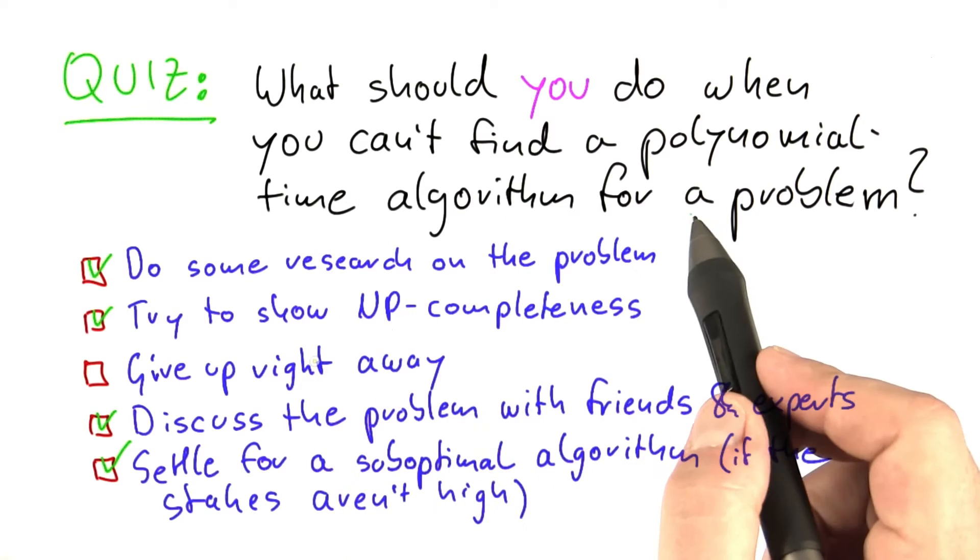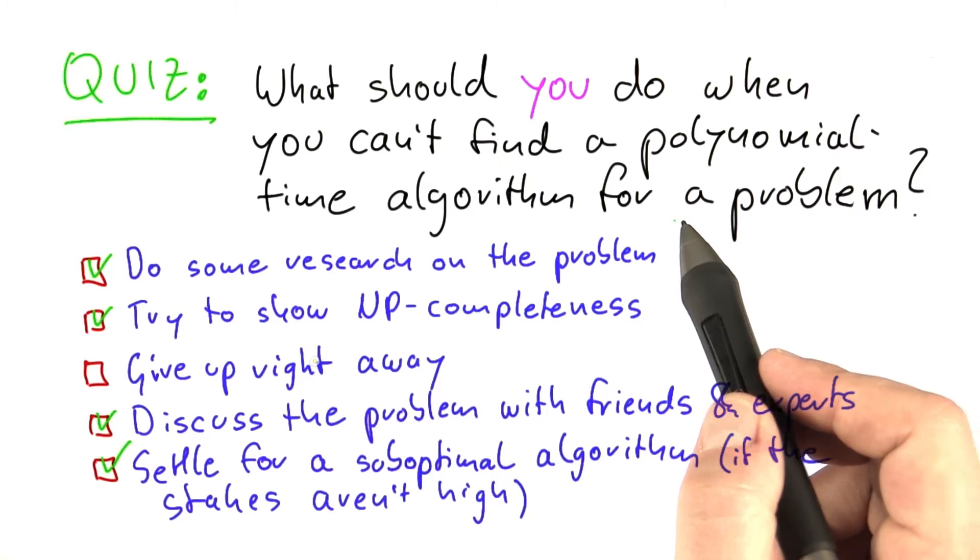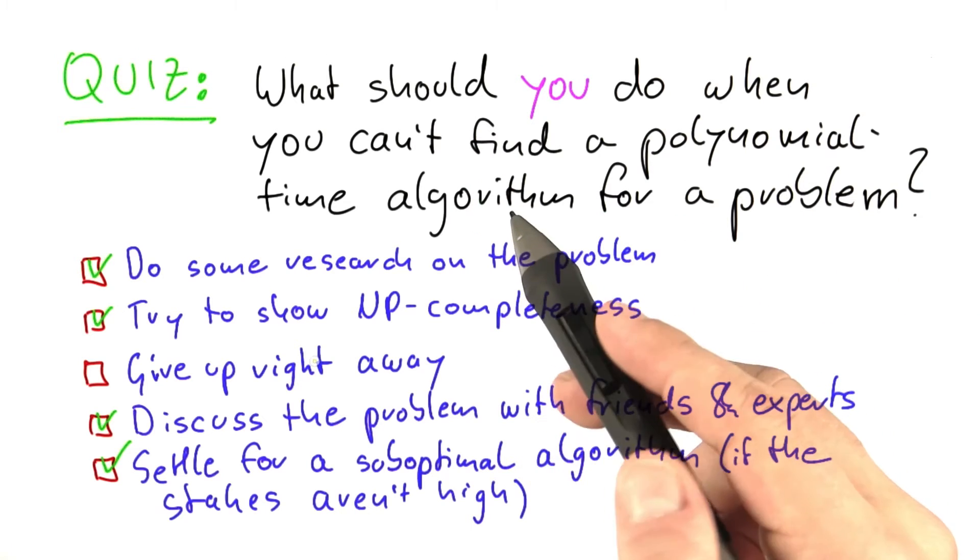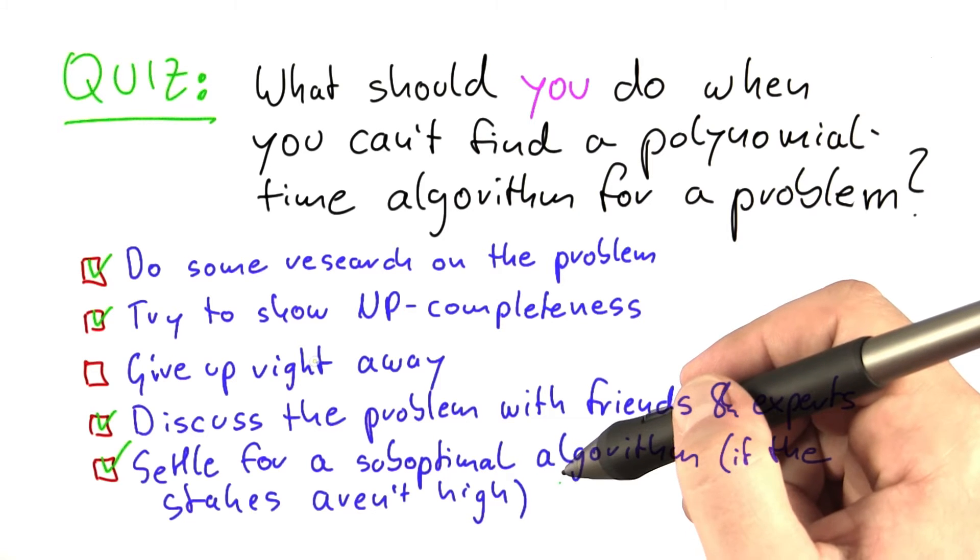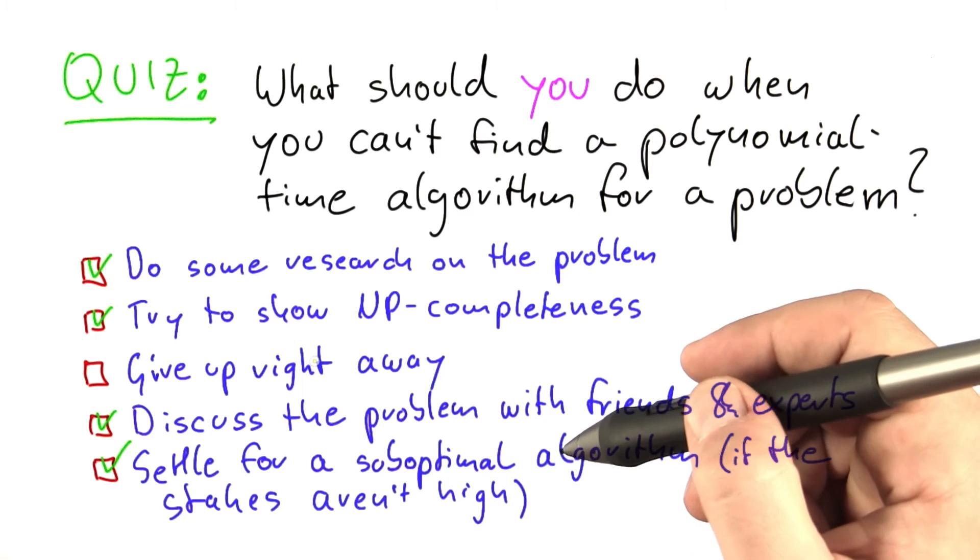So for example Alice working on VertexCover, if her company is happy with installing a few more monitoring devices than the absolute minimum then she can possibly find another algorithm or just maybe even solve it by hand if she wants to.